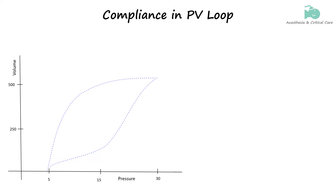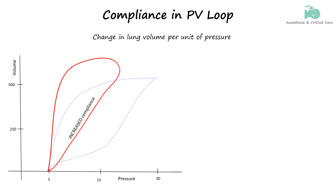Lung compliance refers to how easily the lungs can expand when air is delivered. It is defined as the change in lung volume per unit of pressure applied, and is a key feature that can be visualized from the slope of the inspiratory limb of the loop. With increased compliance, as seen in conditions like emphysema, the pressure-volume loop will show a steeper inspiratory slope, shifting the loop toward the left.